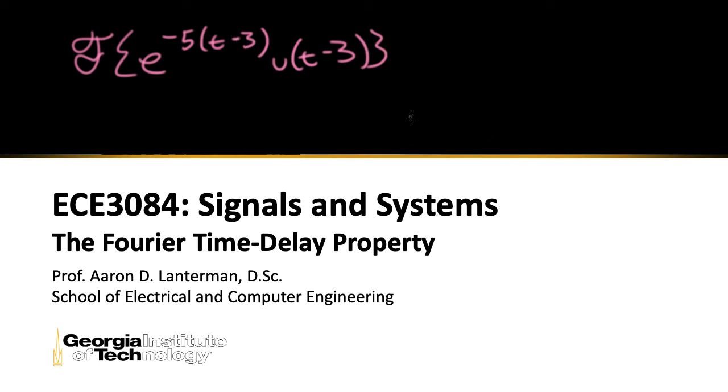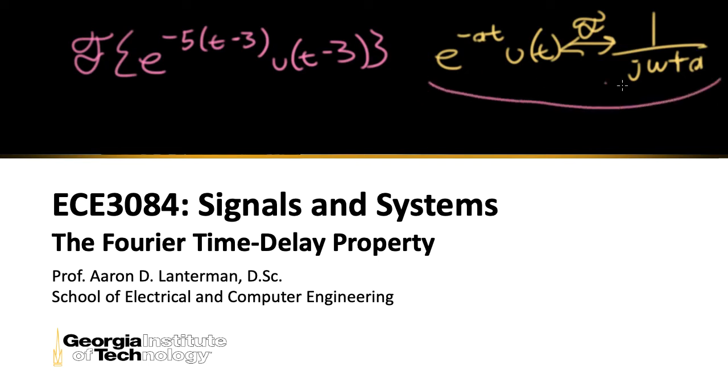Well, you might take this and try to insert it into the Fourier transform integral, but that's a lot of extra work. If you think back a couple of lectures, we already computed a Fourier transform pair that looked like e to the minus at, u of t, Fourier transforms into 1 over j omega plus a. So if we can somehow twist this transform pair around to make it look like this transform pair, we'll be in business.